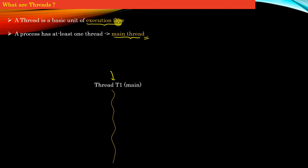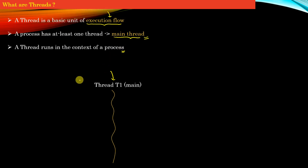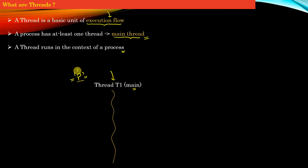An execution flow is an independent set of instructions which execute. A thread runs in the context of a process, so you must have a process P, and that process P contains threads. A thread by itself does not exist — for a thread to exist, the process must exist. In other words, a process is essentially just a main thread.